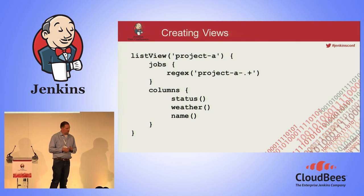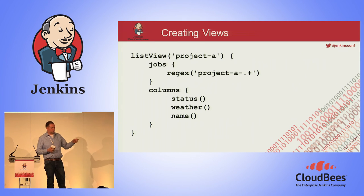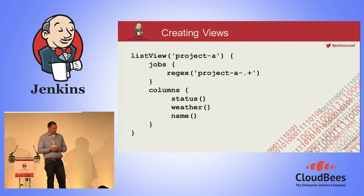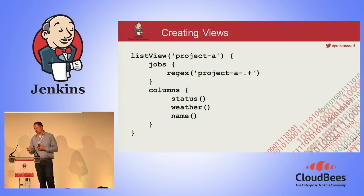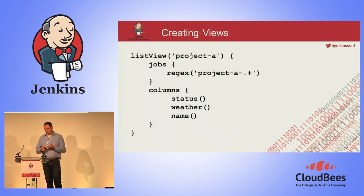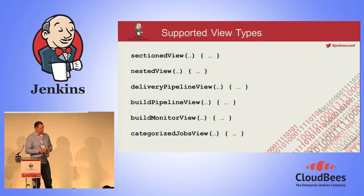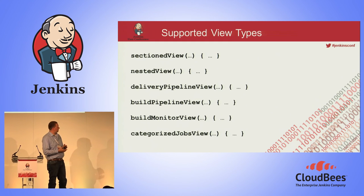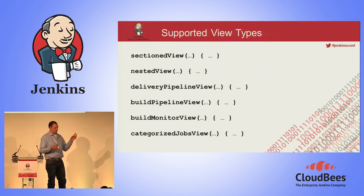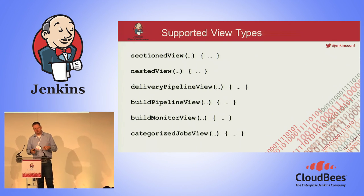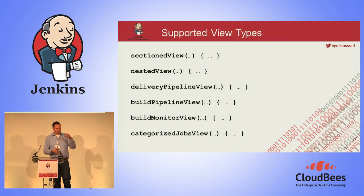You can also define views in the DSL. There's support for several types — this example defines a list view called project-A which will show all jobs starting with project-A as shown in the regex, and then we configure the columns for this view. So it's not only about jobs — despite being called Job DSL, it's grown to support views and folders. Currently there are seven view types supported, including the built-in list view and others. You can configure build monitor views or pipeline views along with the jobs.